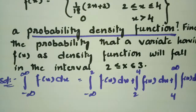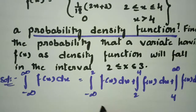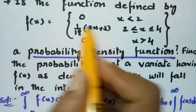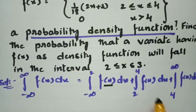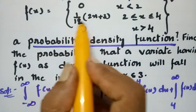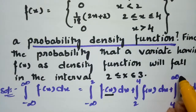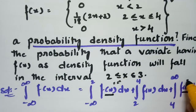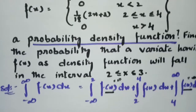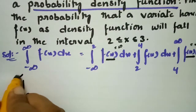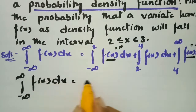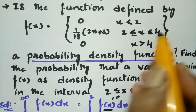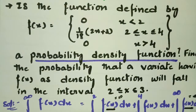We have all the values ready from the question. When x is less than 2, f(x) = 0, so the integral from minus infinity to 2 is 0. Between 2 and 4, f(x) = (1/18)(2x + 3). When x is greater than 4, f(x) = 0, so the integral from 4 to infinity is also 0. So the only non-zero part is the integral from 2 to 4 of (1/18)(2x + 3) dx.